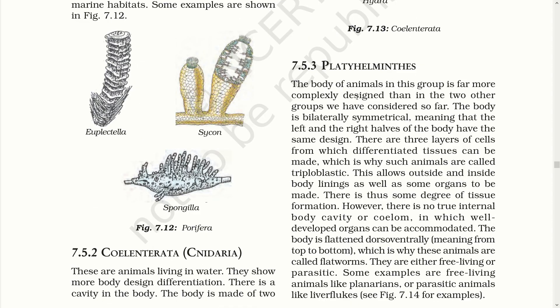The body of animals in this group is far more complexly designed than in the two groups considered so far. The body is bilaterally symmetrical, meaning the left and right halves have the same design. There are three layers of cells from which differentiated tissues can be made, which is why such animals are called triploblastic. However, there is no true internal body cavity in which well-developed organs can be accommodated. The body is flattened dorso-ventrally, which is why these animals are called flatworms. They are either free-living or parasitic. Examples are free-living Planaria or parasitic liver flukes.